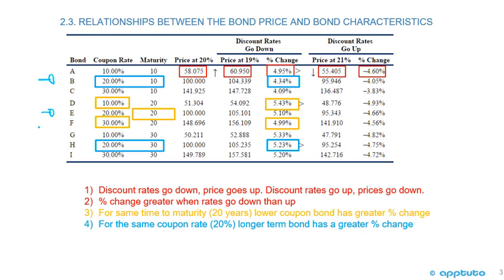For the first relationship, the bond price is inversely related to the market discount rate. Looking at bond A with coupon rate 10% and maturity 10 years: if the market rate was 20%, the price would be 58. If the market rate of interest went down, the price would go up. That's the first relationship, which we should know with no problem. But it's the second, third, and fourth relationships that we need to zoom in on.